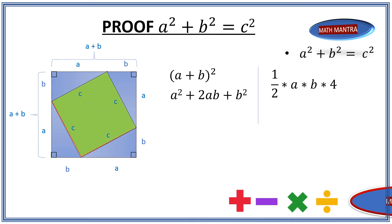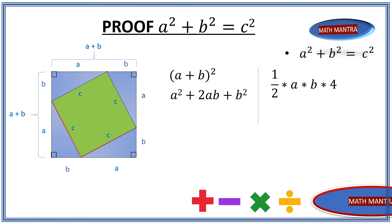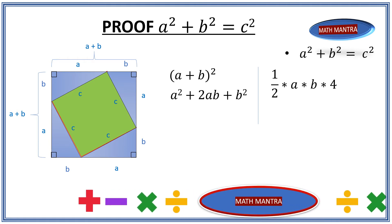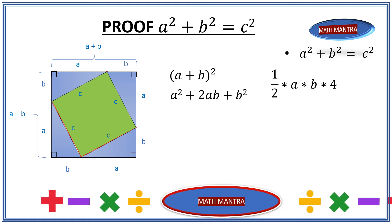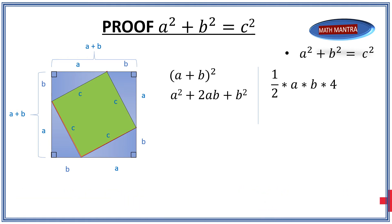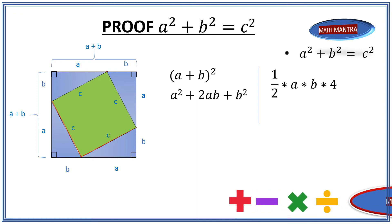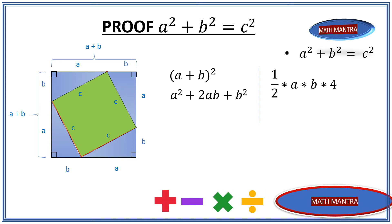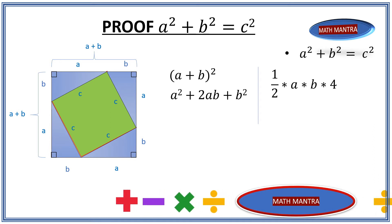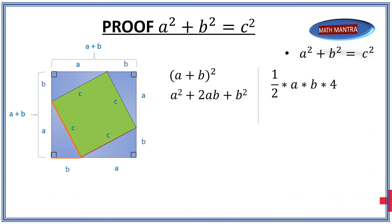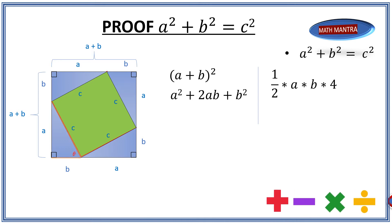Now we need to add the area of the green square in the middle. Since it looks like a diamond shape — it's rotated — let's go about proving that it actually is a square. Let's start by assuming the angle formed between side B and side C is theta.